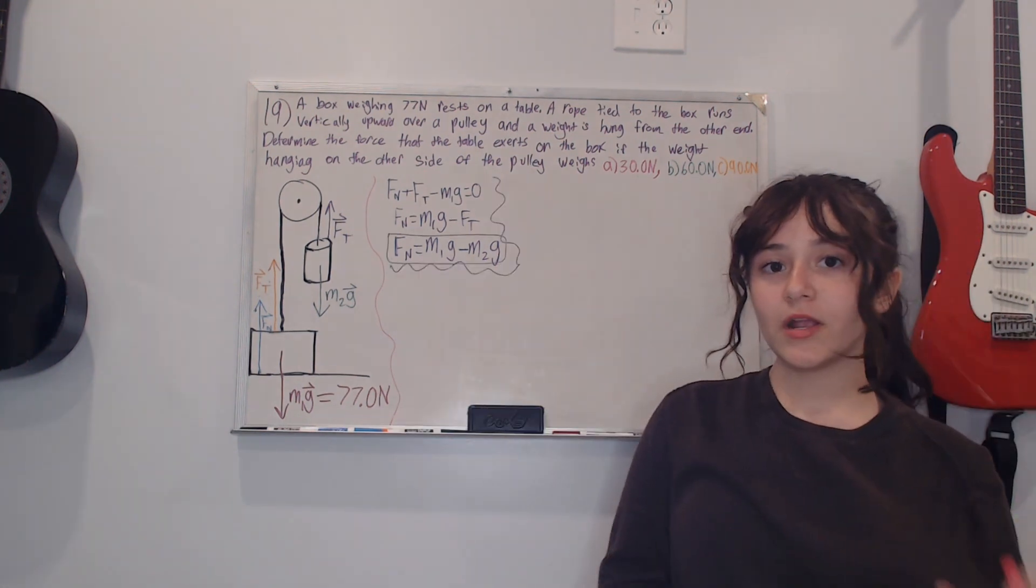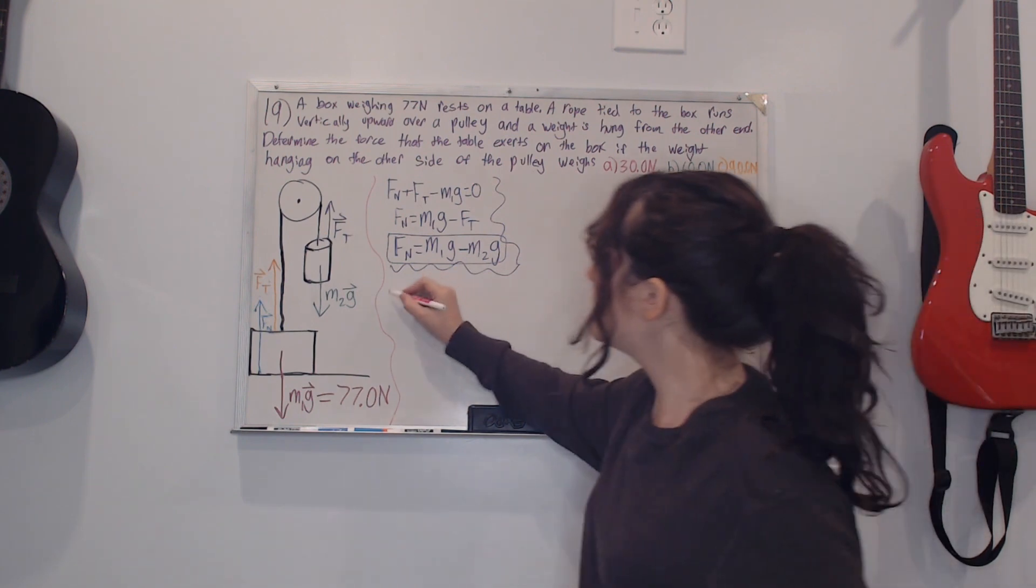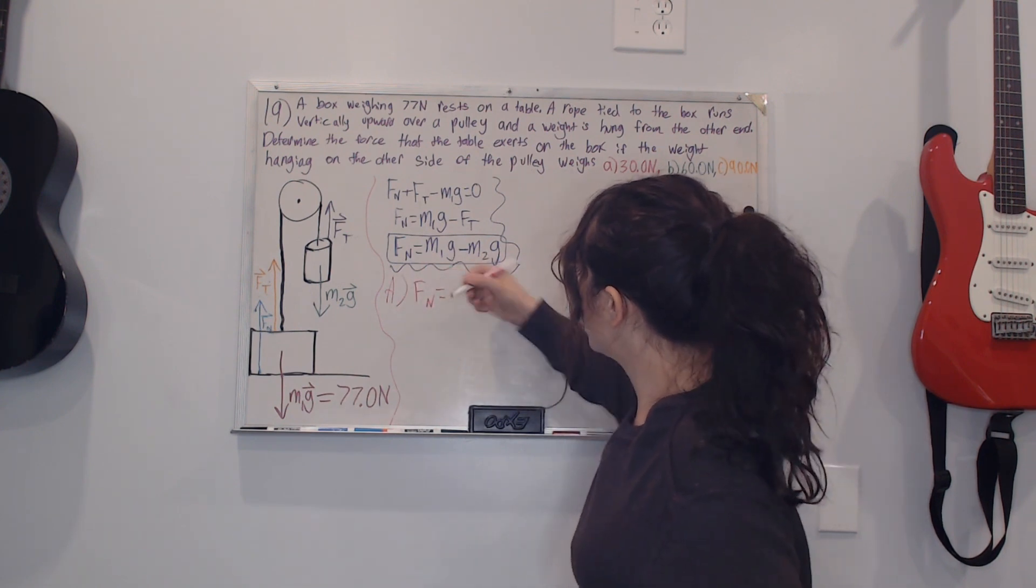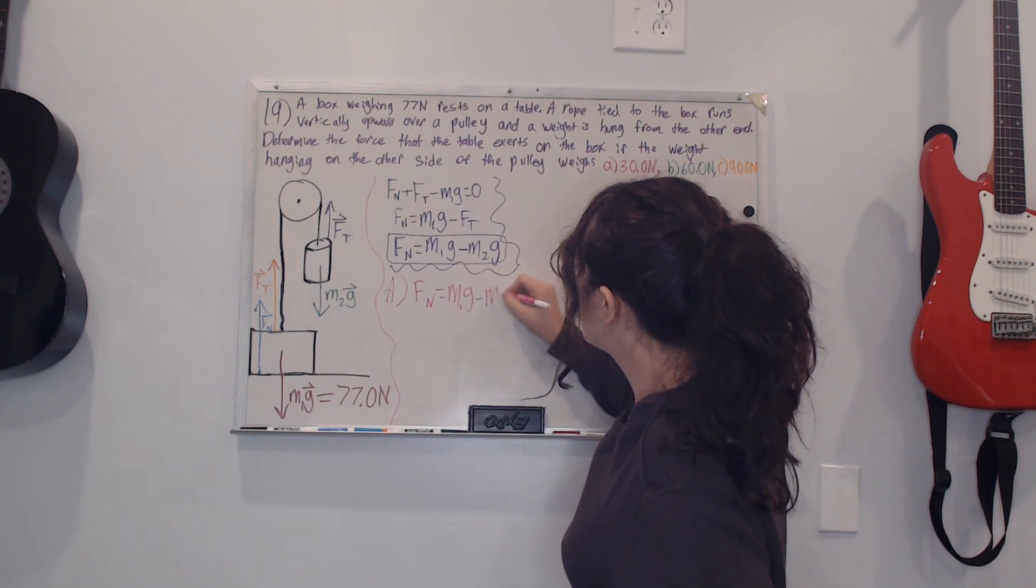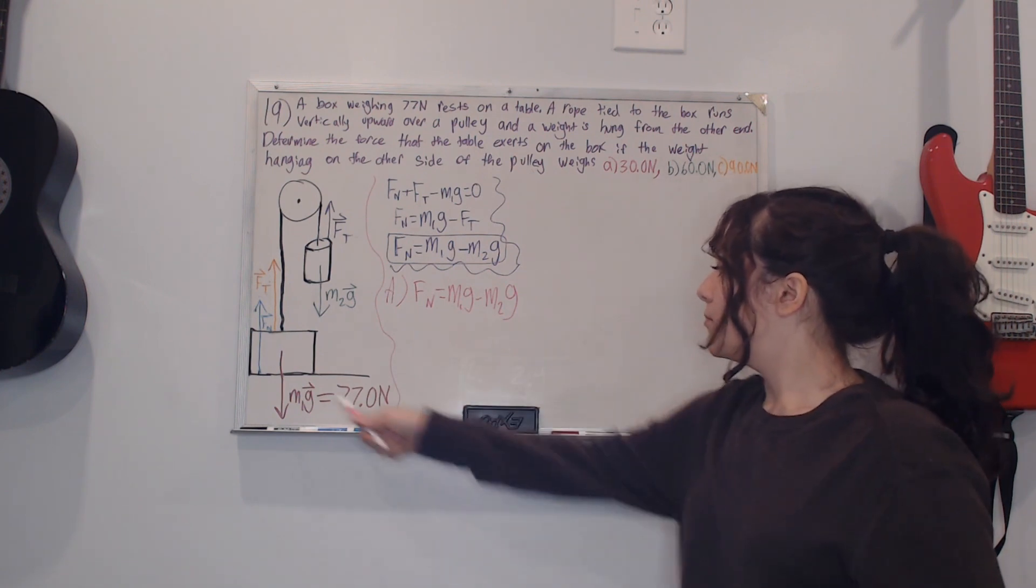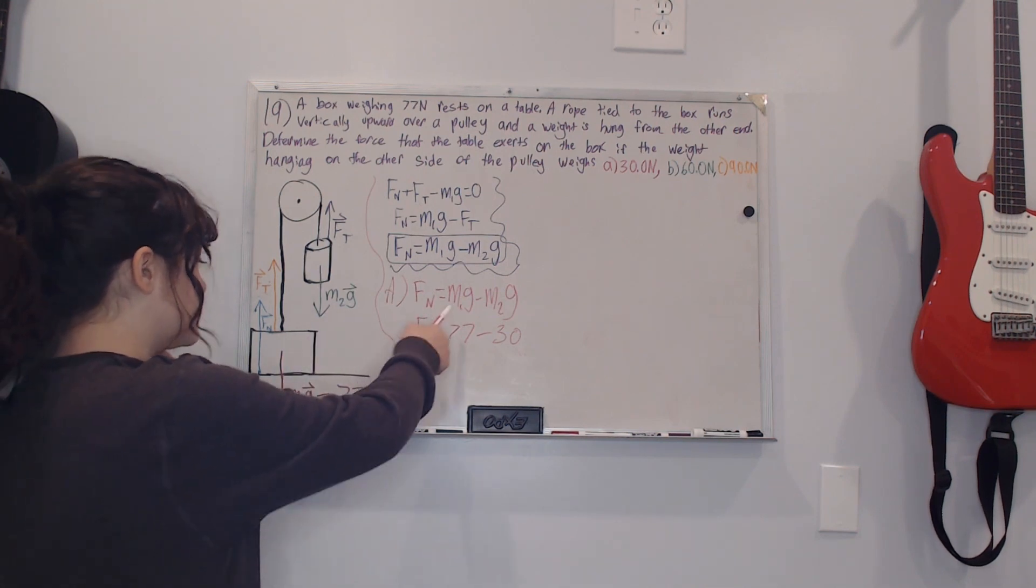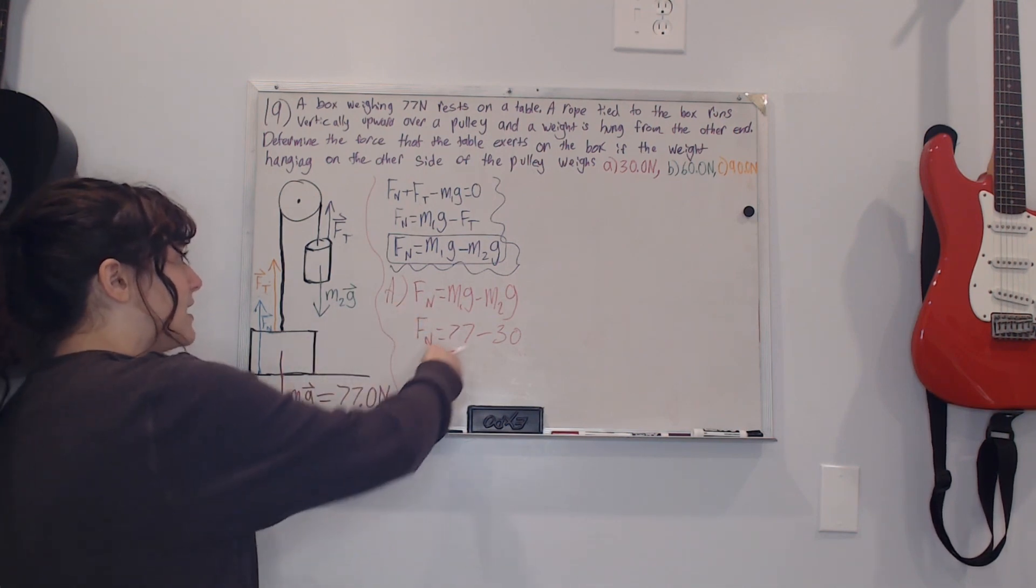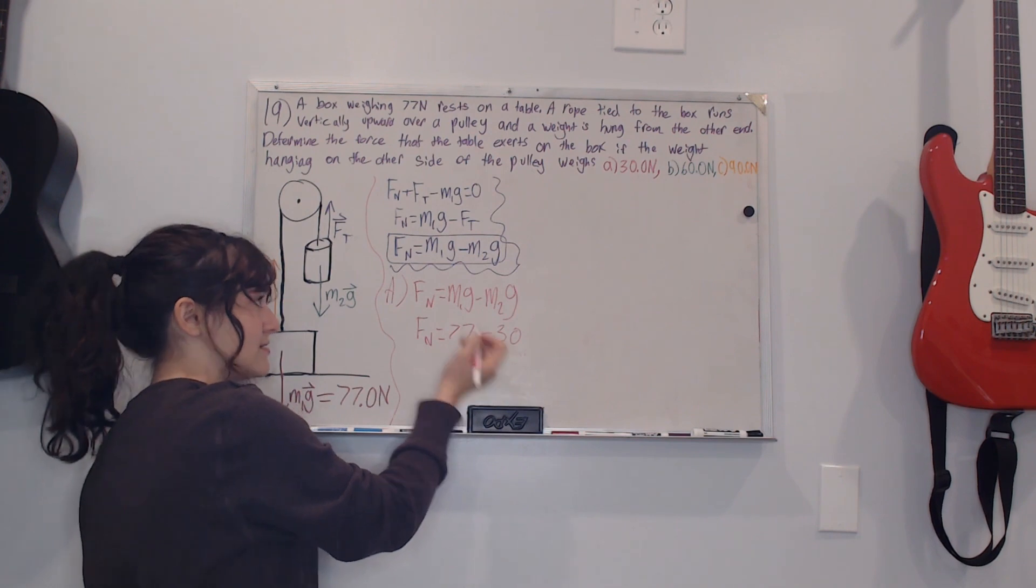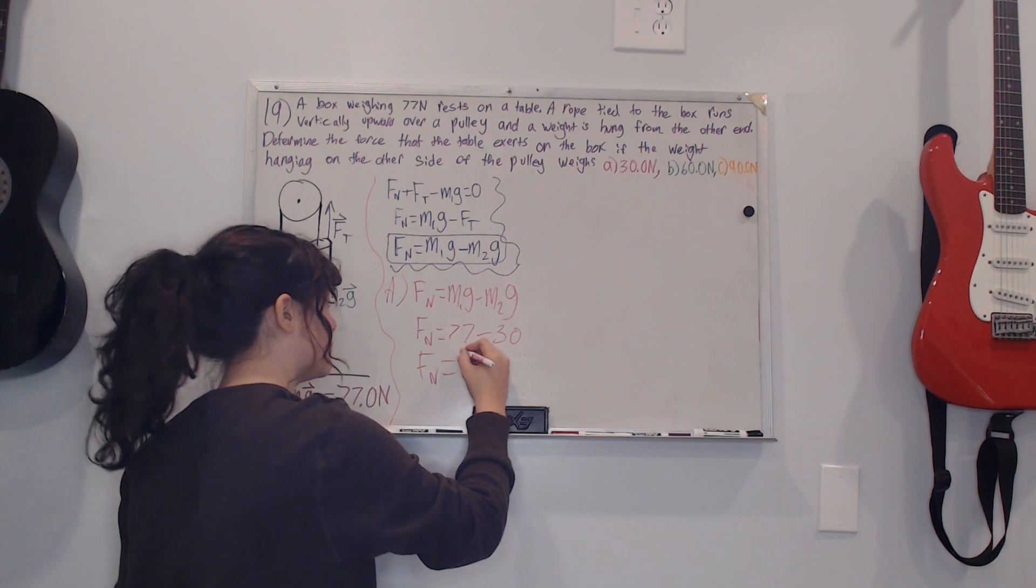From here I'm gonna start by solving each part individually, so I'm gonna start with part a and I'm gonna write down what I got here. After that I have to plug in my m1g which is 77, so I plugged in my values, the m1g is 77 and I also plugged in what it gave me for this weight on this side and that's 30. Now I just solve and my Fn would equal positive 47 newtons, so that's your answer for part a.